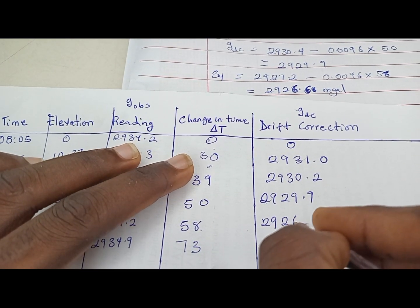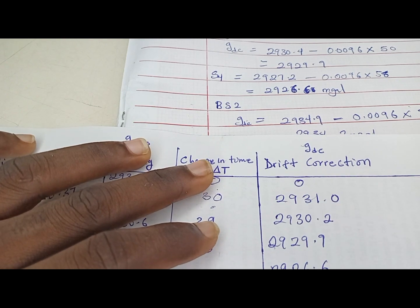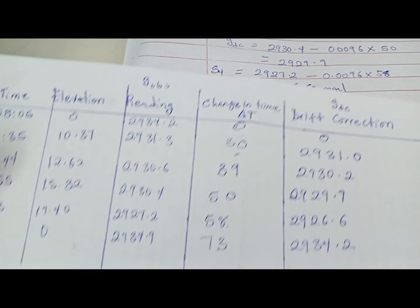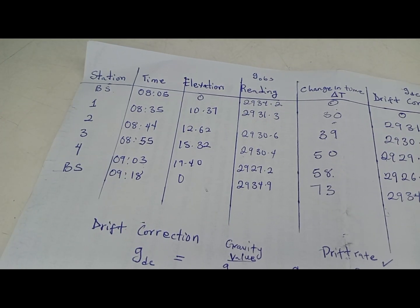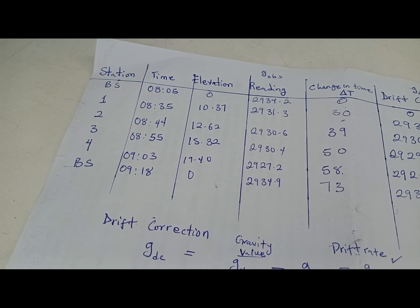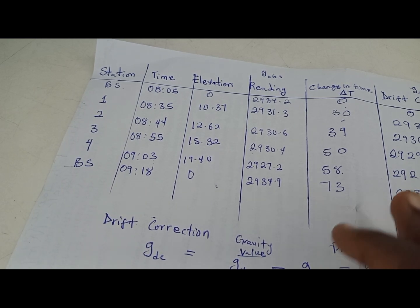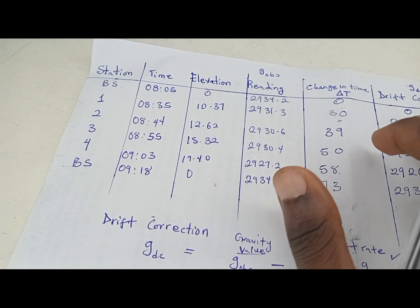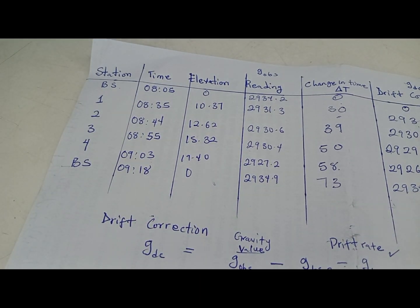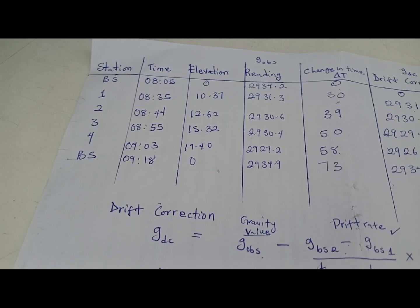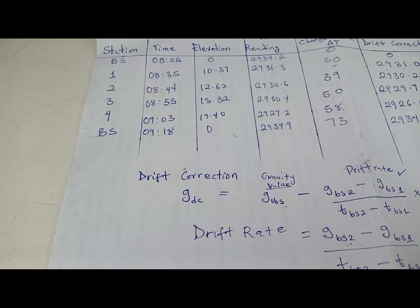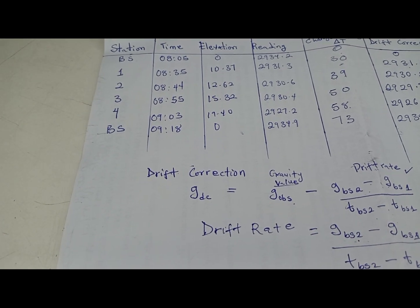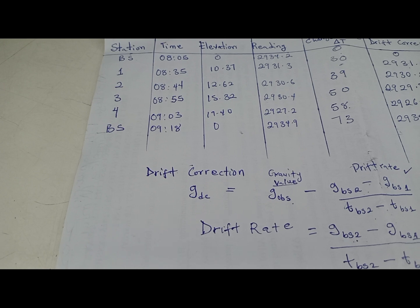So now that is how to solve for your drift correction — simple and straightforward. This GDC, the drift-corrected gravity, shows that you have removed the external factors caused by drift. For any question given, just follow the formula stated. Write down your drift rate formula, plug in your values, and you are good to go. Thank you for watching — please like, subscribe, and comment.